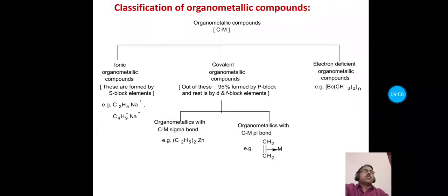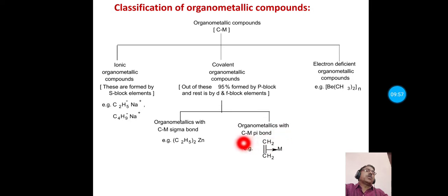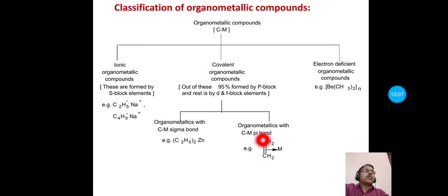In the case of organometallic compounds with a carbon-metal pi bond, the organic part is bonded to the metal by the pi electrons. The example is an ethylene molecule bonded to a metal M.